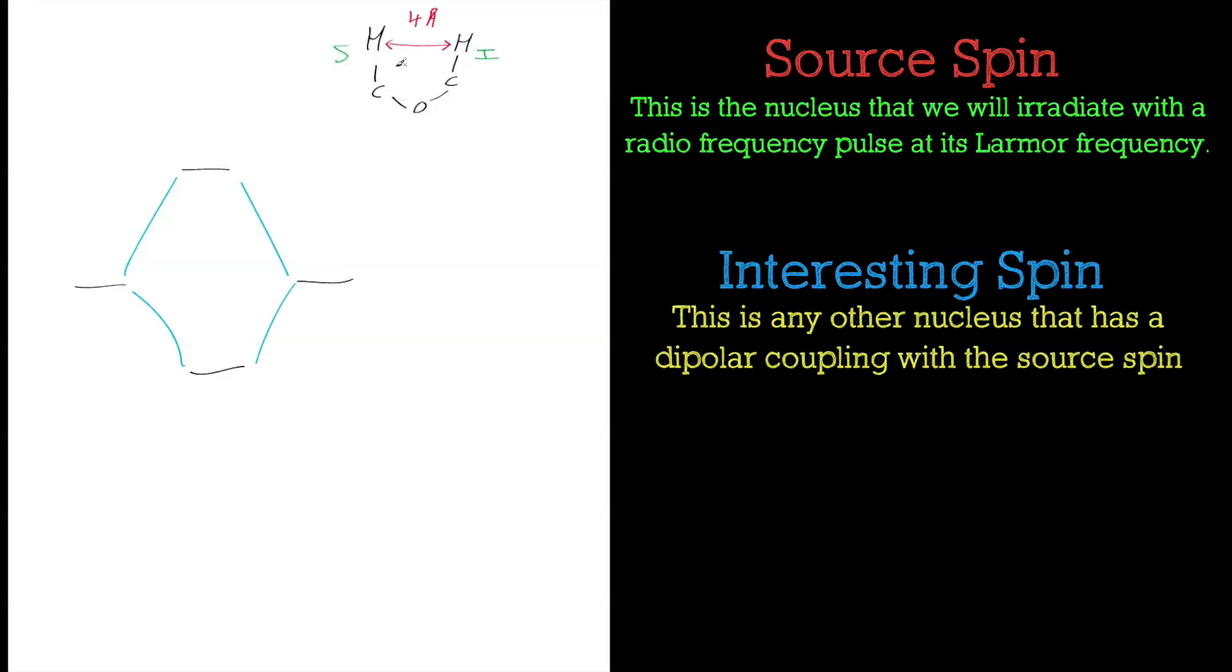The interesting spins are the spins that are going to be highlighted by the radiation of the source spin. We'll call it I for interesting spin, and this is common nomenclature that's used. This is for two nuclei which interact through space, dipolar coupling, separated by about four angstroms. There's no scalar coupling; the oxygen there in the ether kills all the scalar coupling that could go through the bonds.